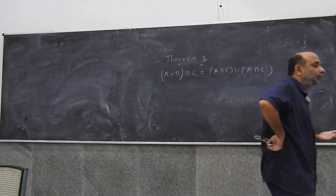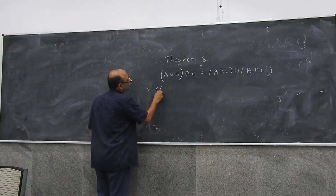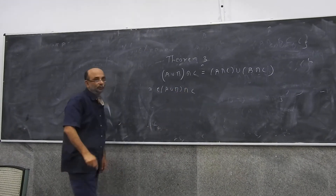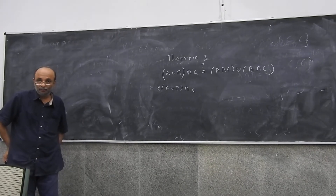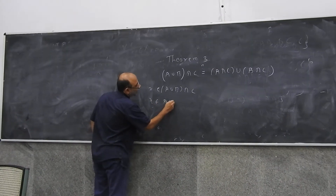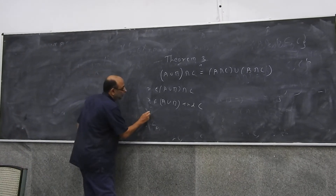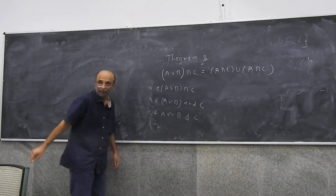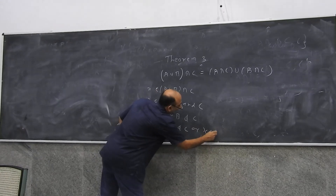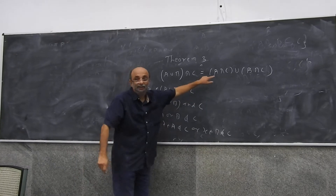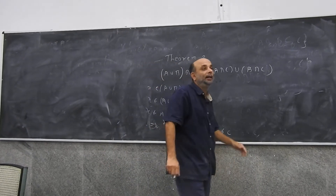We need to do a more formal proof. Suppose X belongs to A union B intersection C. Then it means X belongs to A union B and C. That means X belongs to A or B, and C. Which means X belongs to A and C, or X belongs to B and C. But this statement is nothing but the original statement. So it is two different ways of looking at the same system.